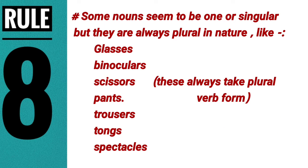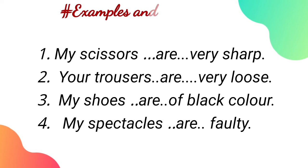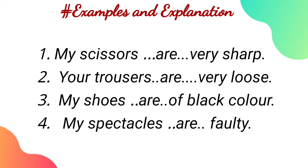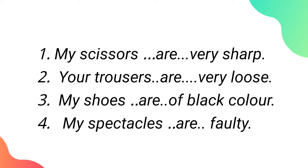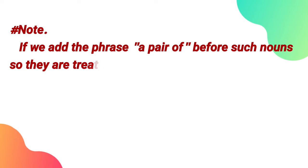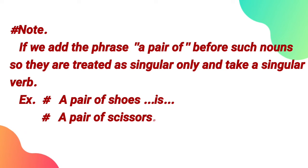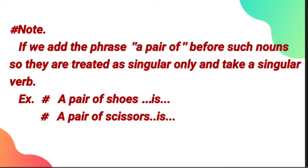The eighth rule: some nouns seem singular but are always plural in nature — like glasses, binoculars, scissors, pants, trousers, tongs, and spectacles. These always take plural verb form. For example: 'My scissors are very sharp,' 'Your trousers are very loose,' 'My spectacles are faulty.' However, if we add 'a pair of' before such nouns, they take singular form — 'A pair of shoes is...' and 'A pair of scissors is...' are correct.